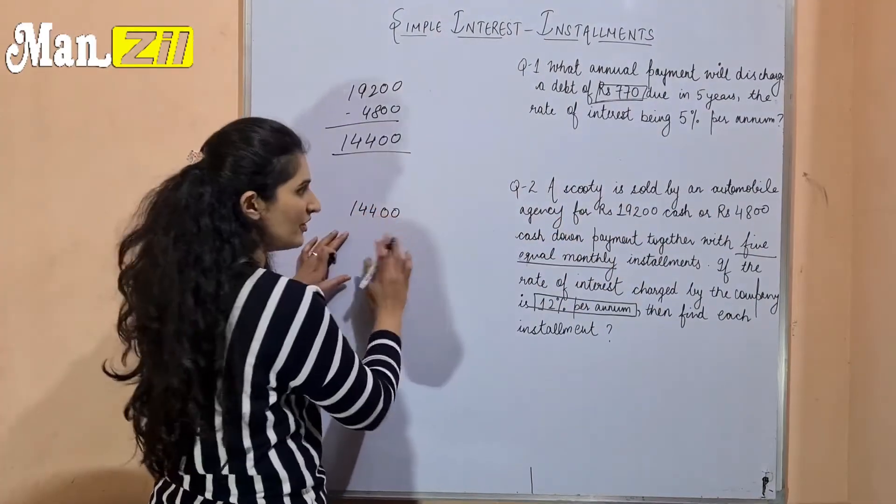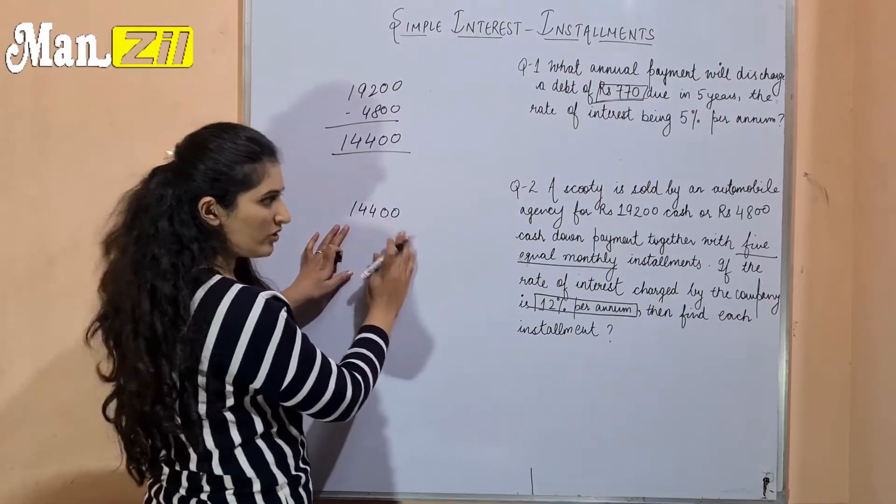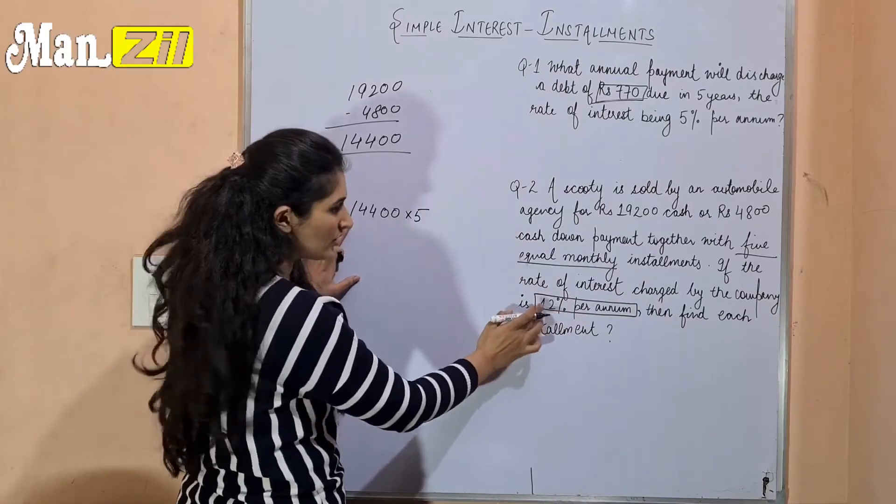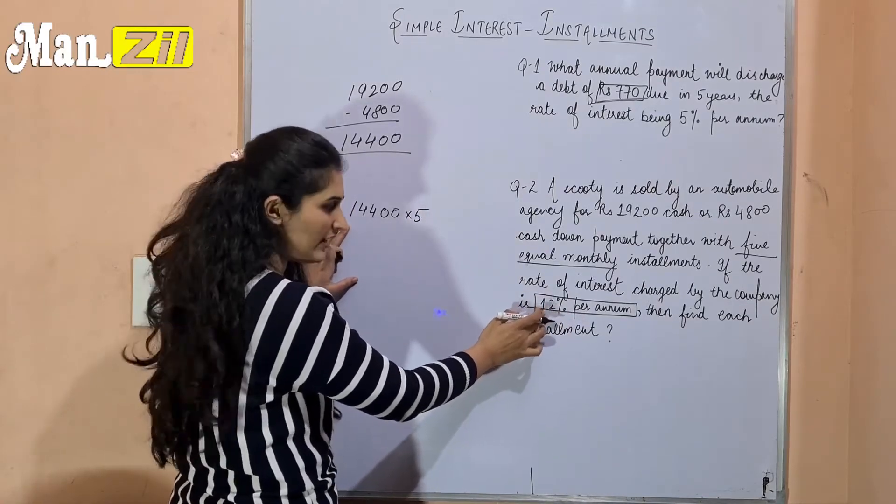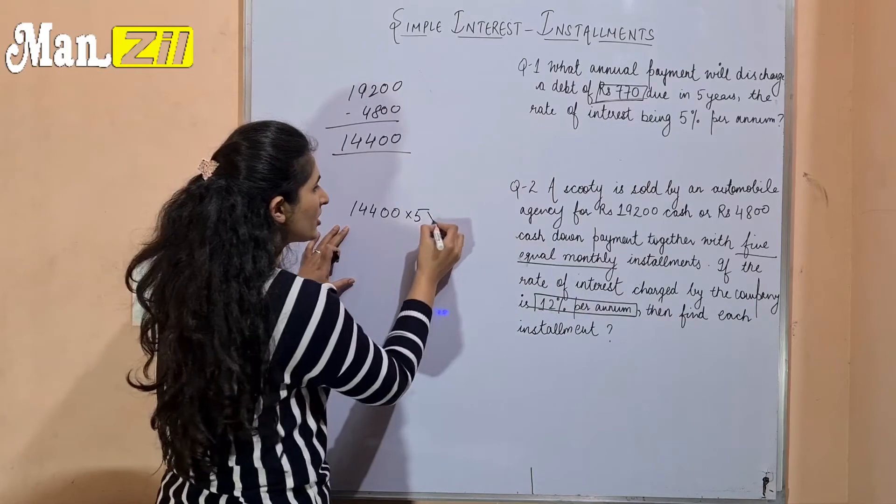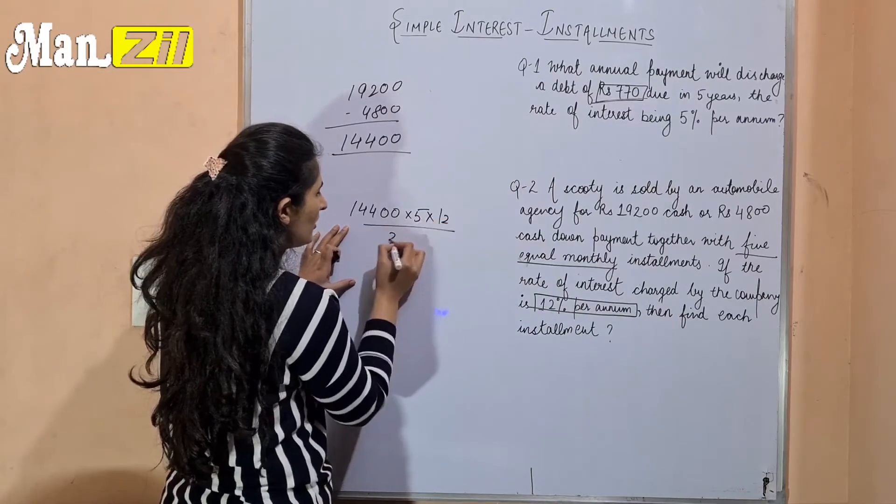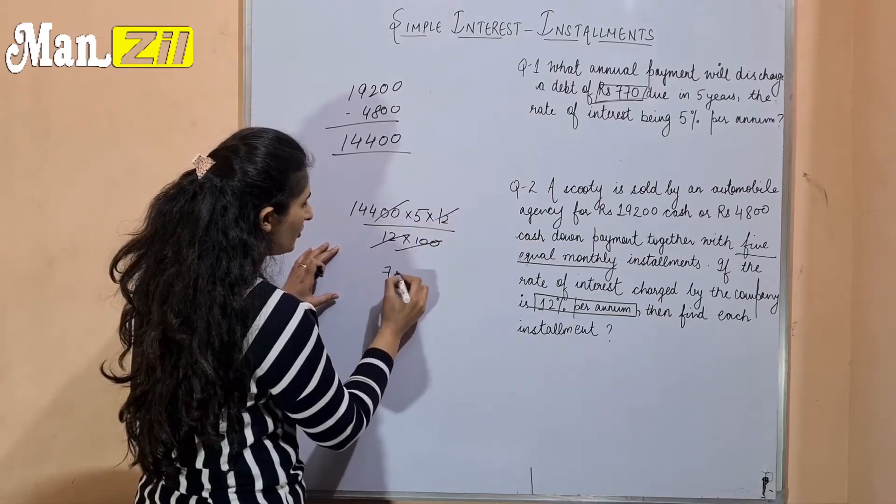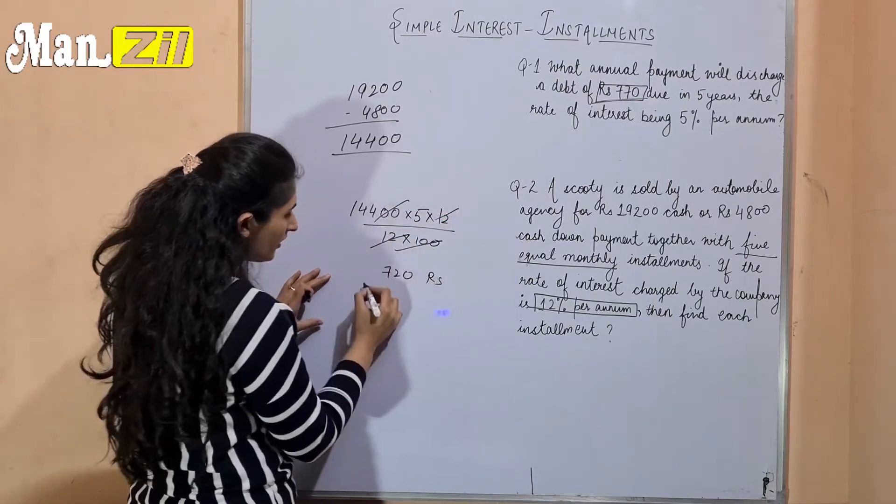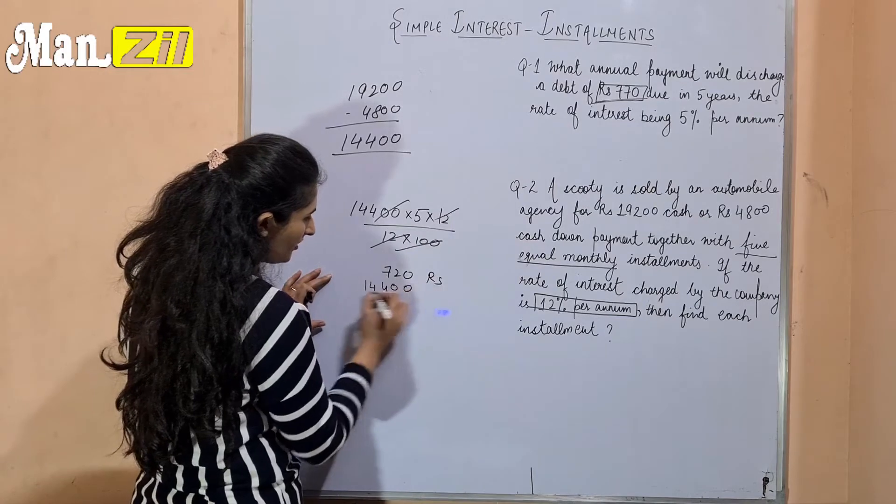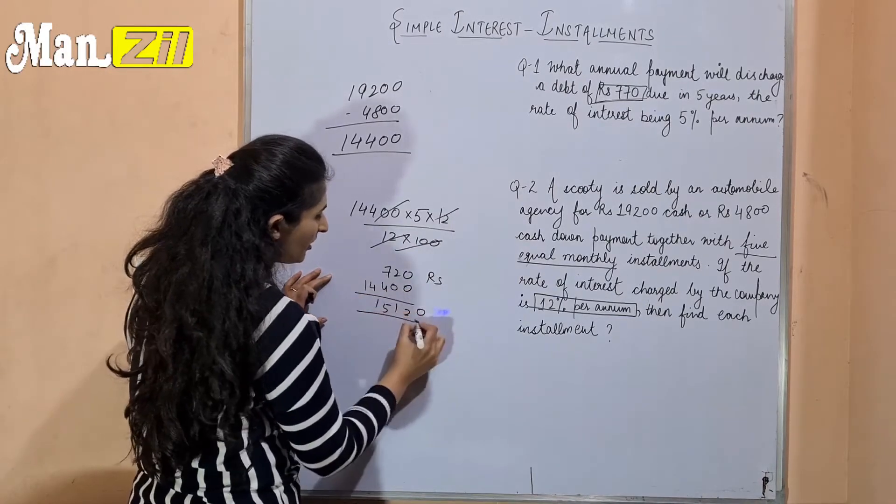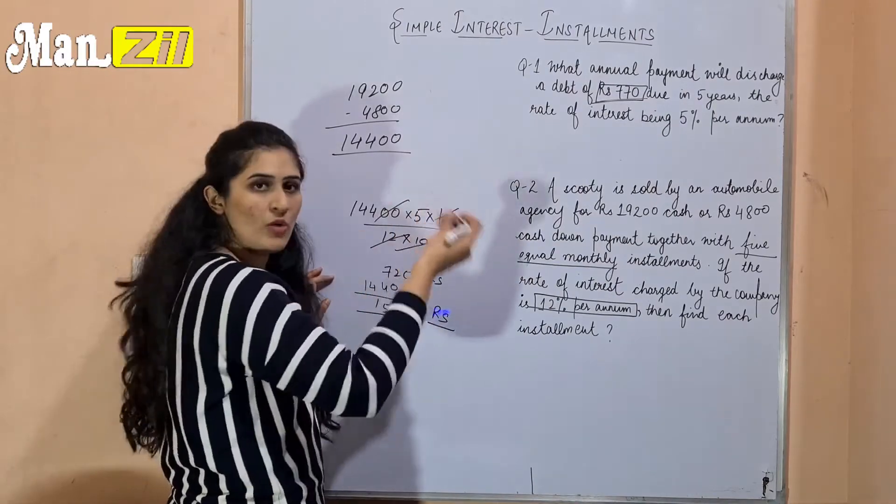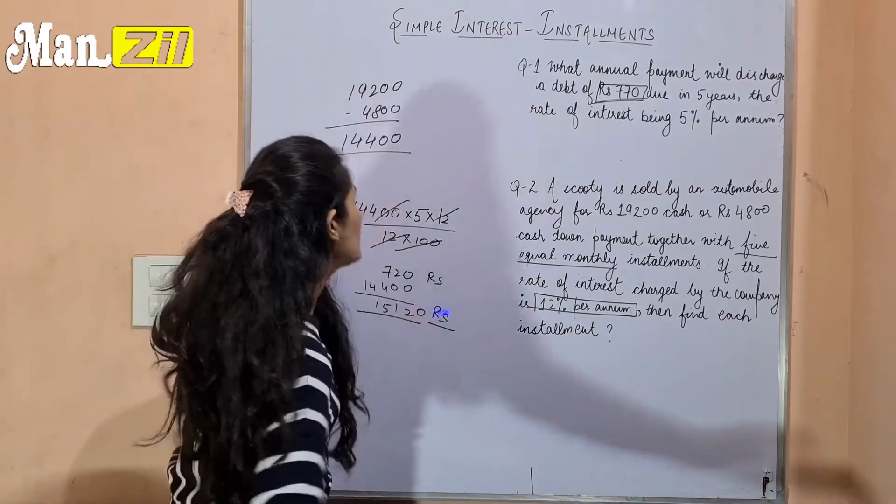Now we have to calculate. Principal is 14,400, time is 5 monthly installments. But if we have a rate of 12% yearly, and we have monthly installments, we will divide the rate by 12 to get 1% per month. This is my amount in rupees. Now for this question, I have to calculate in units. We have to do the same thing.